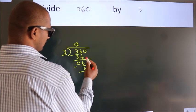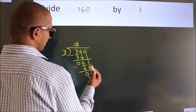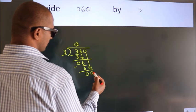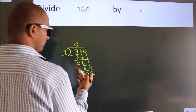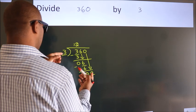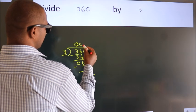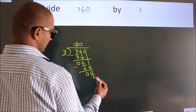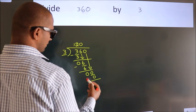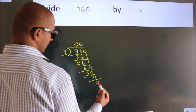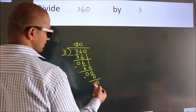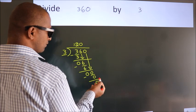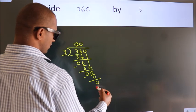After this, bring down the beside number. So, 0 down. So, 0. When do we get 0? In 3 table, 3 times 0, 0. Now, we subtract. We get 0. So, after this, no more numbers to bring it down. So, we stop here.